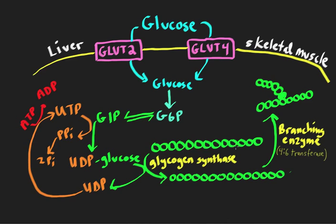The enzyme that adds glucose to the growing glycogen chain is called glycogen synthase. This is an important enzyme because it is the site of regulation. The name is easy to remember because it contains 'glycogen' and 'synthase,' reminding us it's part of the glycogen synthesis pathway. Here we have about 13 glucose molecules all strung together in alpha-1,4 linkages, and glycogen synthase simply adds another one, extending the chain to 14.